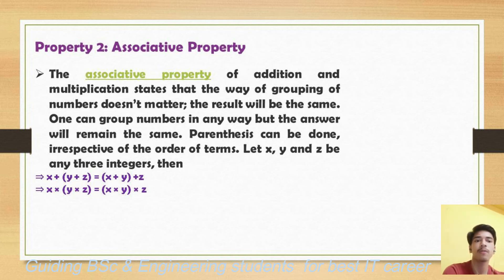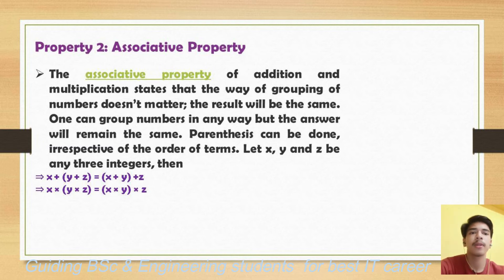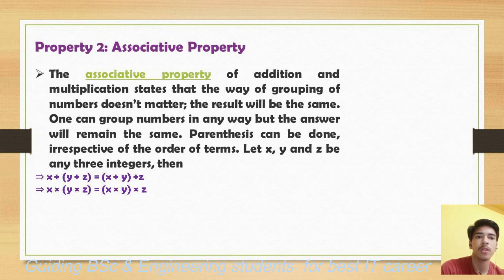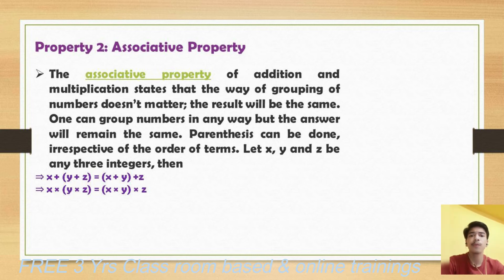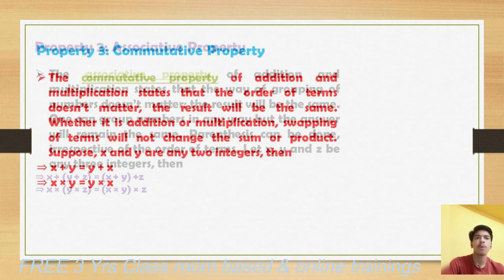However, subtraction operation of integers is not associative in nature. For example, x minus (y minus z) is not equal to (x minus y) minus z. Similarly, division operation of integers also does not follow associative property.